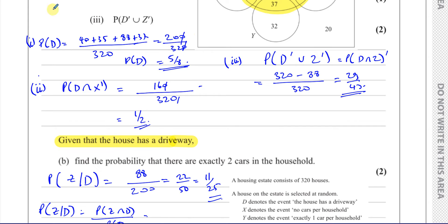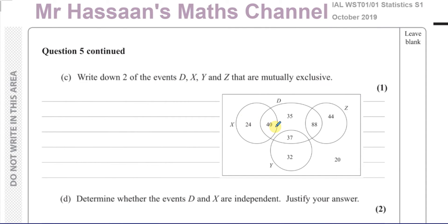Now I'm going to go on to part C. It says: write down two of the events D, X, Y and Z that are mutually exclusive. When two events are mutually exclusive, there are no intersections between them. So we could write, for example, X and Y — there's no intersection between X and Y. Or you could write Y and Z, or X and Z.